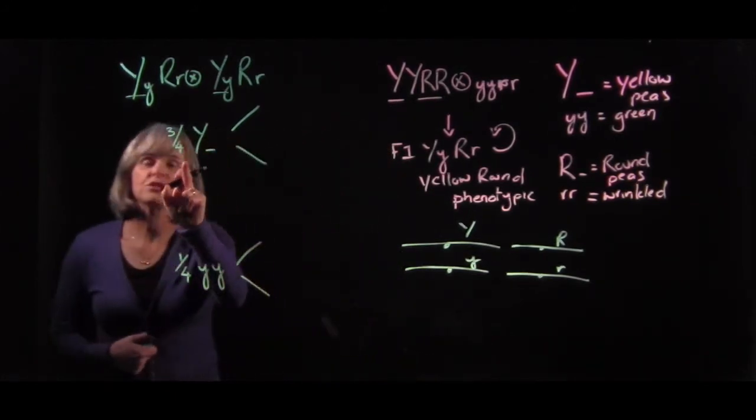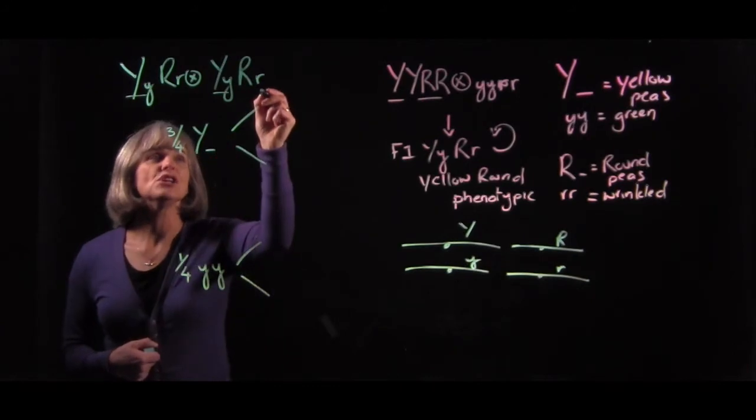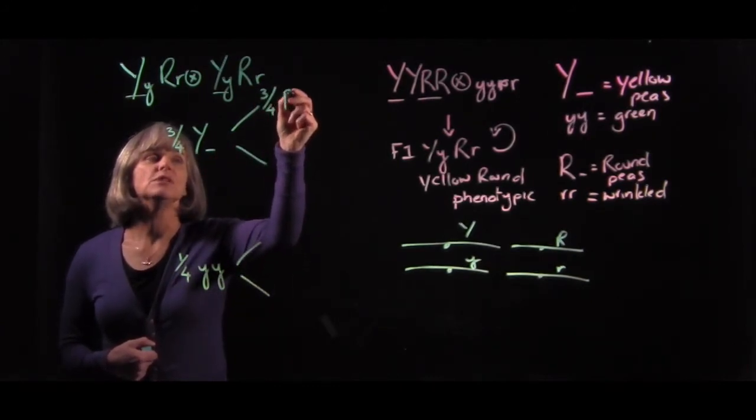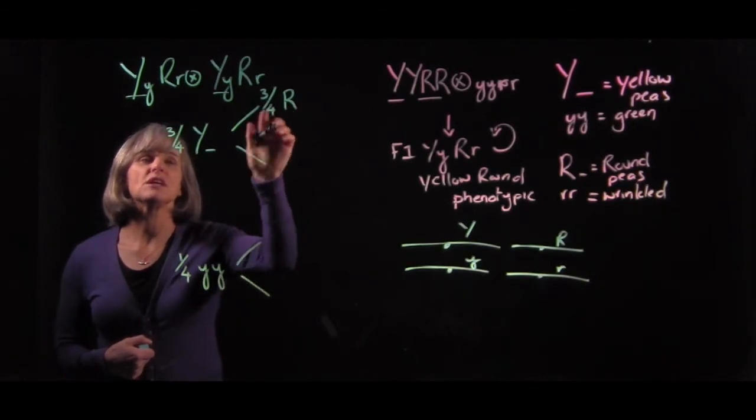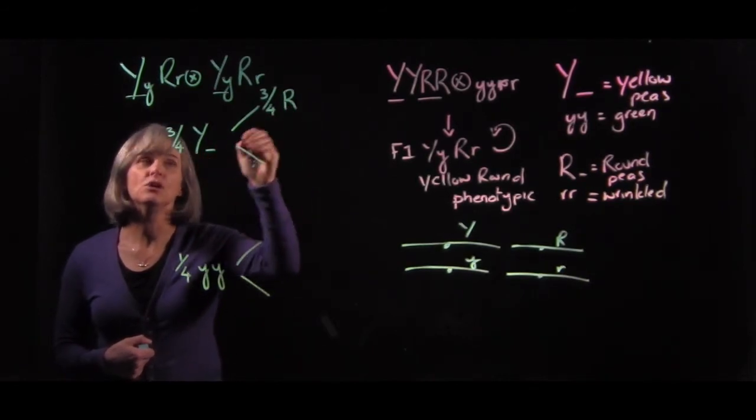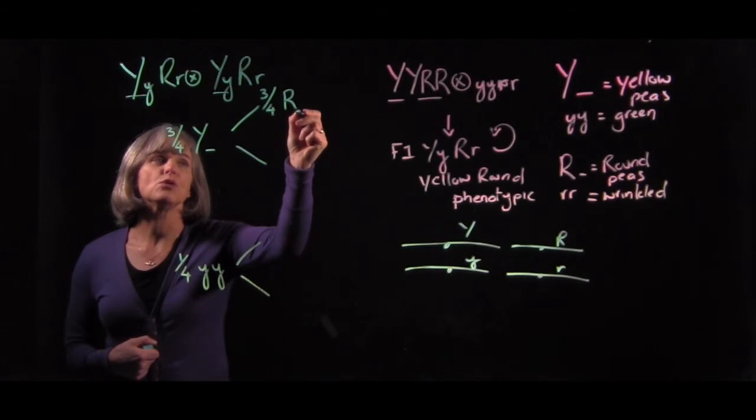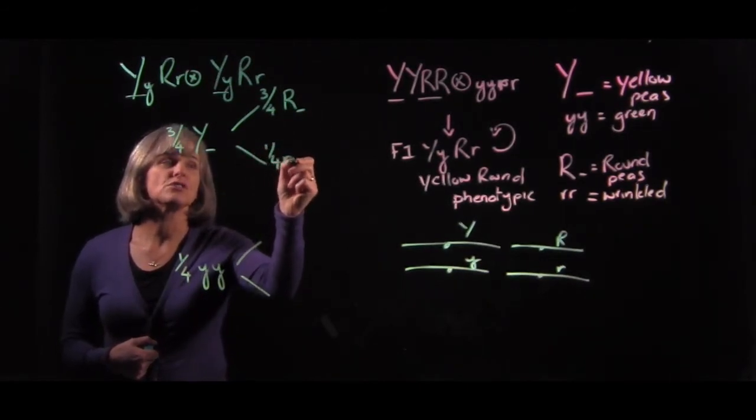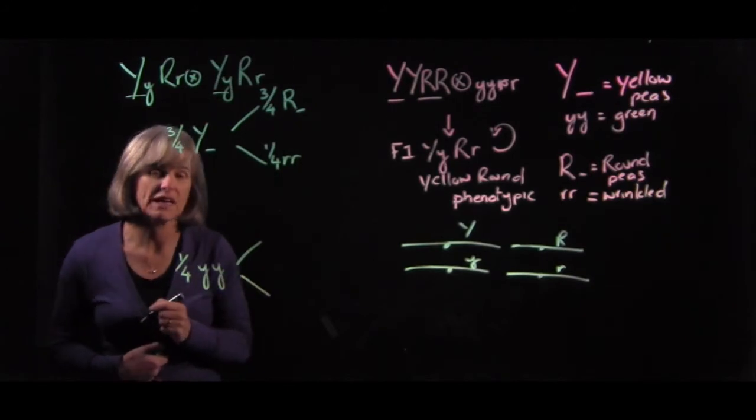Therefore, of the three quarters peas that are yellow, we would expect three quarters of those to be round and one quarter of those to be wrinkled because those are independent events. And of the one quarter peas that are green, we would expect three quarters to be round and one quarter to be wrinkled.